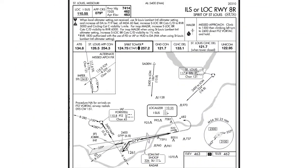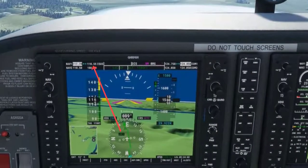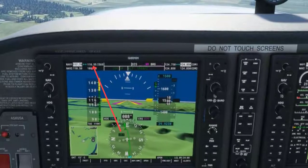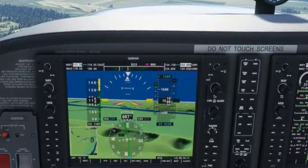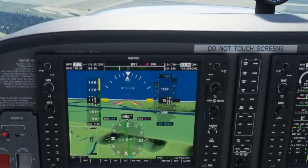In our next example, we are going to set NAV1 to a localizer as if we were doing an approach. Let's take a look at an ILS or localizer approach to KSUS runway 8R. KSUS is Spirit of St. Louis Airport. You will see that the frequency for the localizer is 110.55. Now I am set to localizer 1, NAV1, and you can see NAV1 is now set to the localizer frequency. We will be going into approaches in much greater detail in the future, so stay tuned.